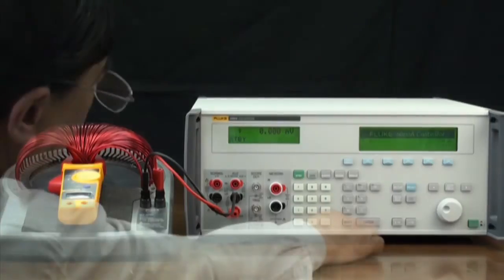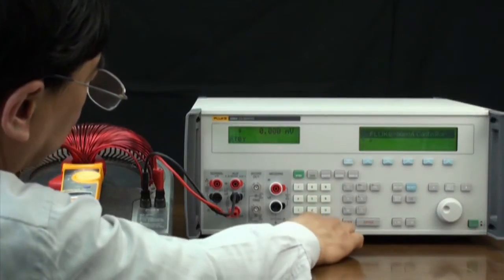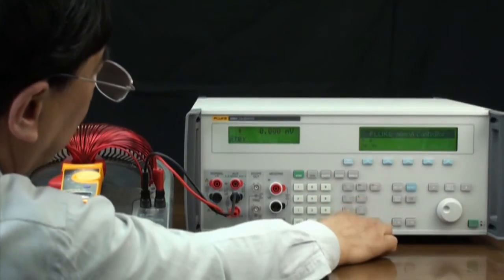Set the 5080A to output 5 Amps and frequency to 50 Hz. Press the Enter key.